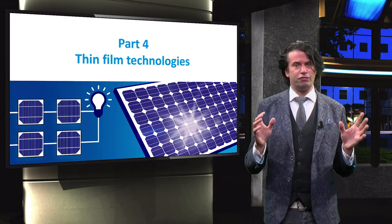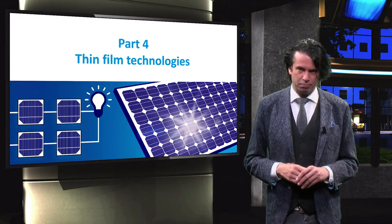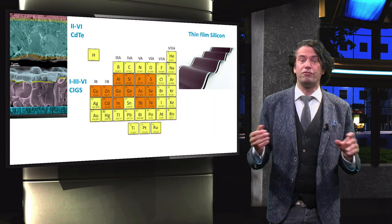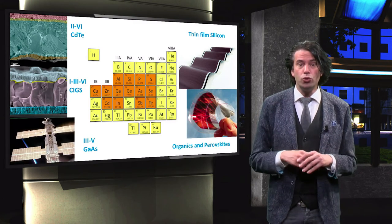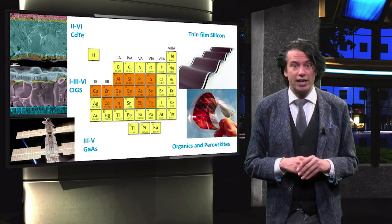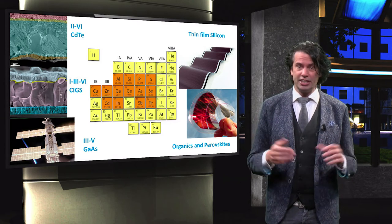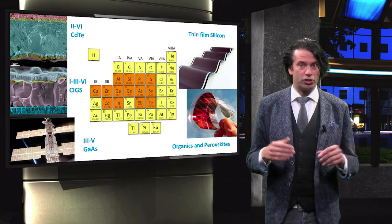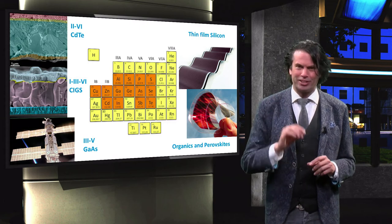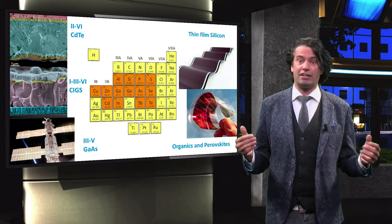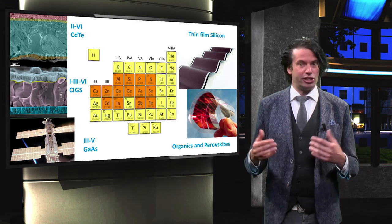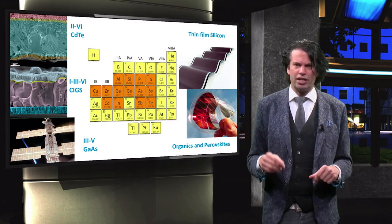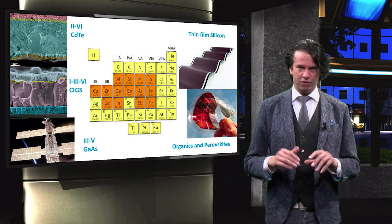In the fourth section of this course we will discuss the most important thin film technologies. We will spend three weeks on thin films in which you will learn all about thin film silicon, chalcogenides like the II-VI technology cadmium telluride and the I-III-VI technology CIGS, the III-V technology gallium arsenide, and some organic PV technologies like organic polymers, dye-sensitized solar cells, and perovskites. Each of these technologies has specific advantages and disadvantages. In this section you will learn about the material properties, module architectures, advantages and limitations of all these PV technologies.